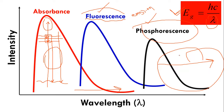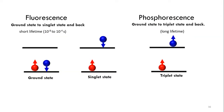In fluorescence, the transition occurs between the ground state and the singlet state. In phosphorescence, the transition occurs between the ground state and the triplet state. In phosphorescence we lose some energy due to inter-system crossing. I will explain what this means in the next video, but let's briefly discuss fluorescence and phosphorescence now.